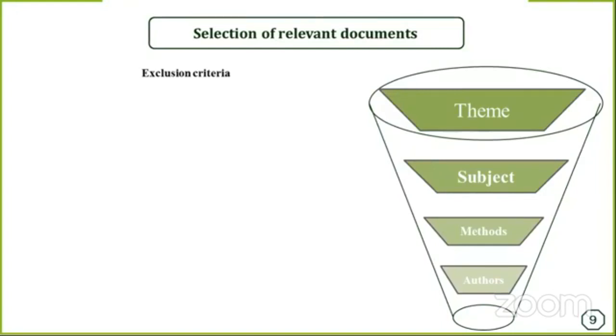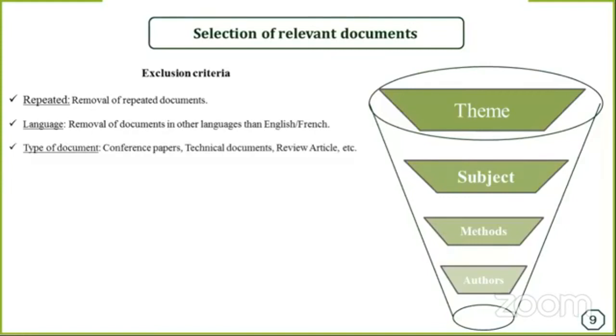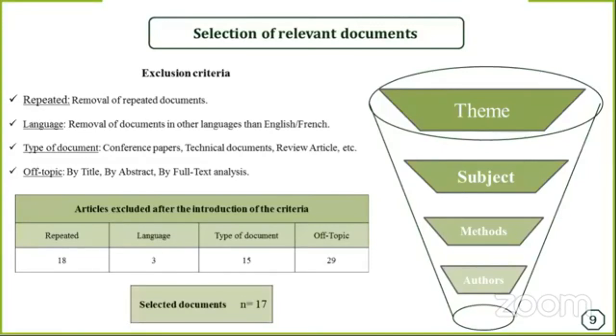Now we move to the exclusion criteria. The first thing we need to do is remove repeated documents. If we use two or more databases, we will have duplicate documents, so we need to remove the duplicates. We could find documents written in other languages than French or English that we could remove. We could remove some types of documents like technical reports or conference papers. By doing deep reading, we could remove irrelevant documents. Here's an example: after removing repeated documents and documents in languages other than French and English, we have 17 documents that are selected.